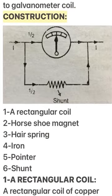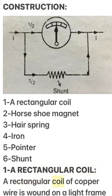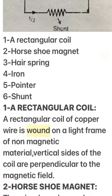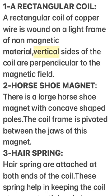Construction: 1. A rectangular coil. 2. Horseshoe magnet. 3. Hairspring. 4. Iron core. 5. Pointer. 6. Shunt. A rectangular coil of copper wire is wound on a light frame of non-magnetic material. Vertical sides of the coil are perpendicular to the magnetic field. 2. Horseshoe magnet: There is a large horseshoe magnet with concave-shaped poles. The coil frame is pivoted between the jaws of this magnet.